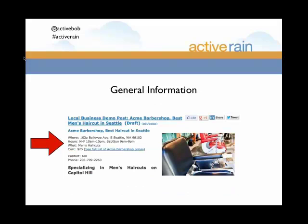The second part is the general information section. Long-time ActiveRain members who've written these types of posts know that people actually call or email with questions, and a lot of those are based on that general set of information. If I'm writing about a local barbershop, it's not beyond the realm of possibility that I'll get a call asking what time they're open or how much a haircut costs. We want that first section to cover the who, what, when, where, and why — varying from business to business. For my barbershop, that means cost, location, and hours.